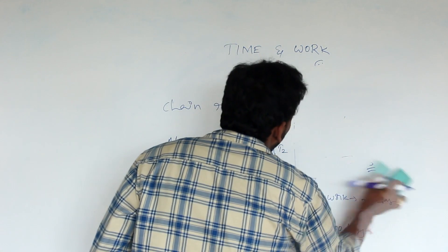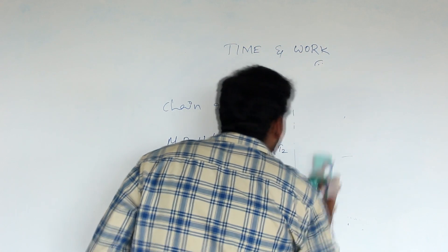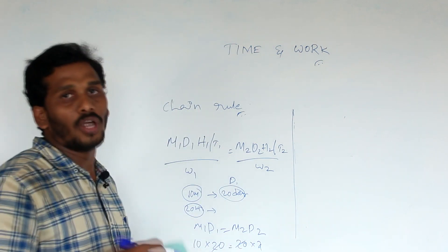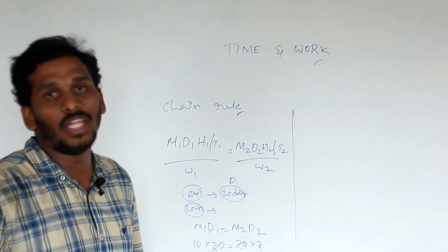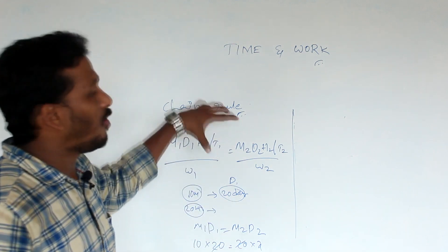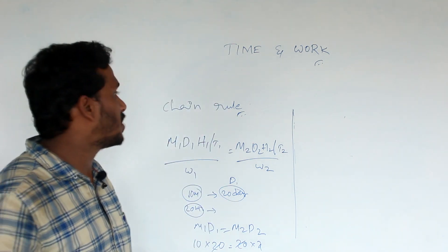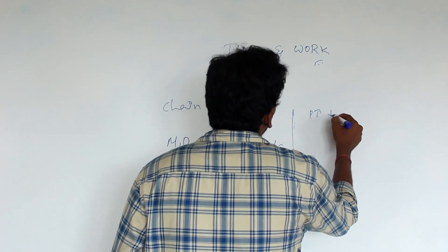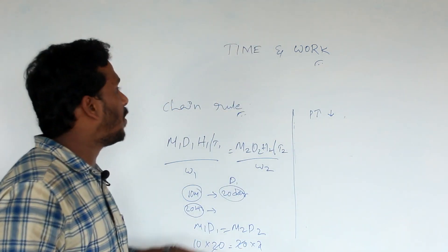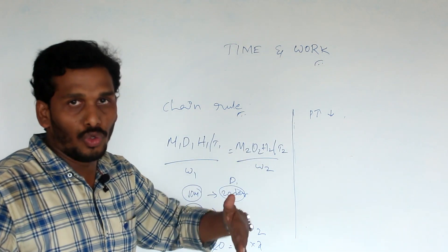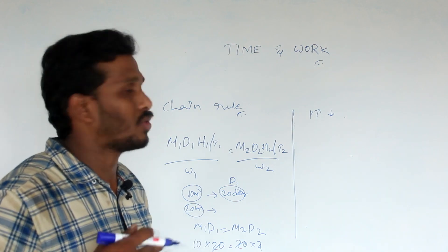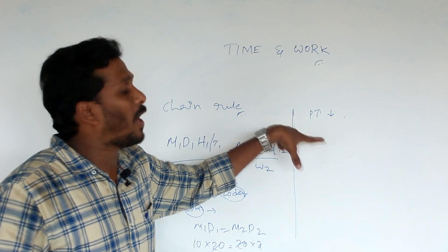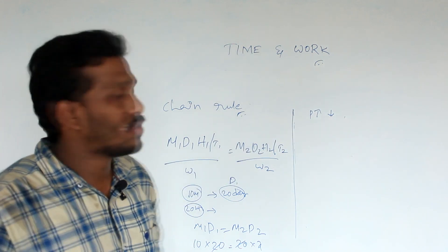The next concept is pipes and cisterns. This is the second concept after time and work. Work involves number of parts completed. The key elements are: number of men doing work, a filling pipe which fills a number of parts, and an empty pipe which drains a number of parts. Pipes and cisterns follow the same logic as time and work.